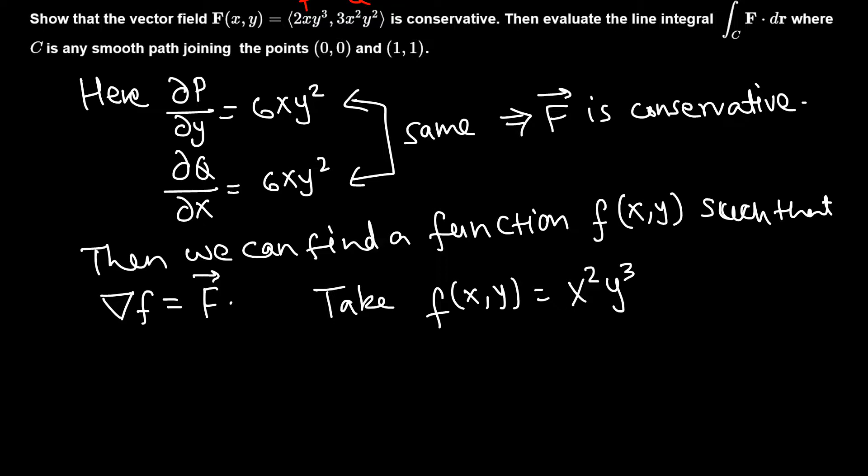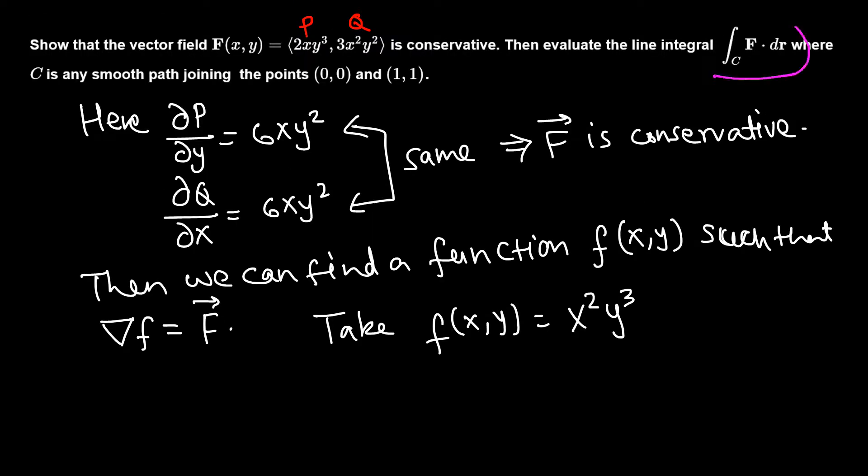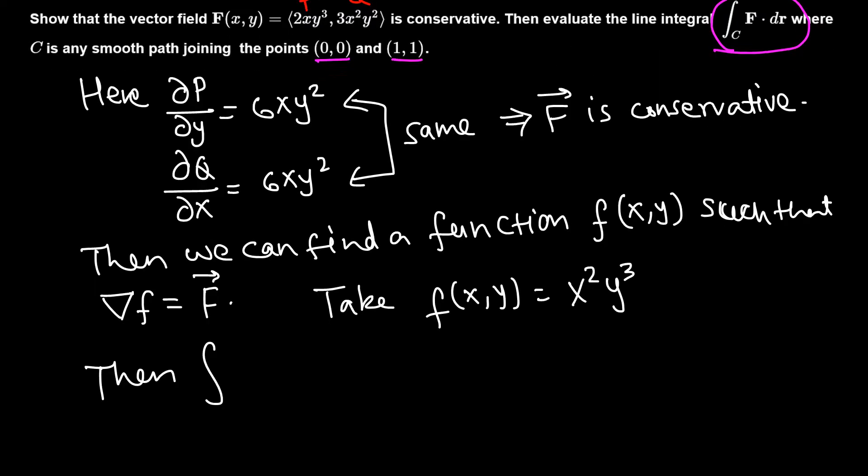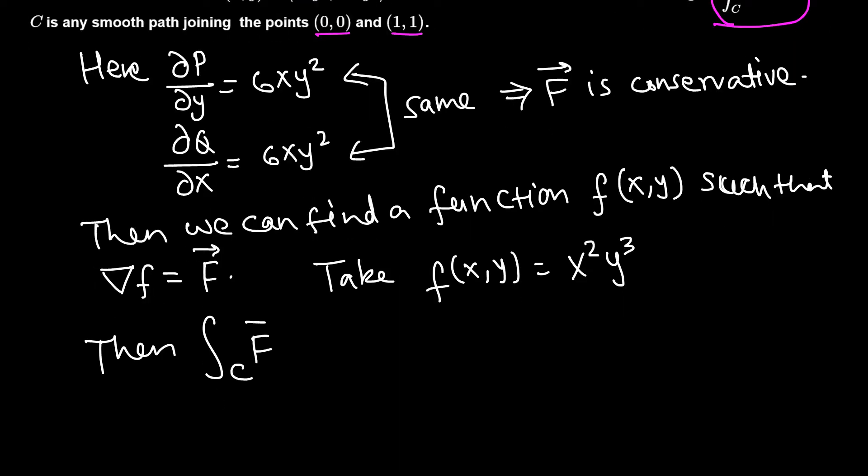Then this line integral that we are trying to evaluate here from (0,0) to (1,1), then this line integral F·dr will be just this f function evaluated at the terminal point minus f function evaluated at the initial point.